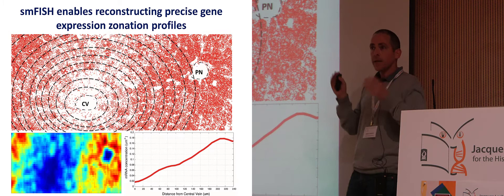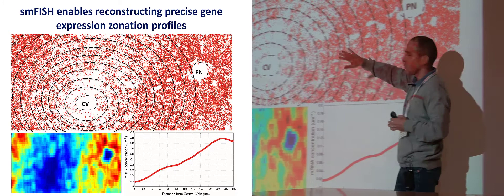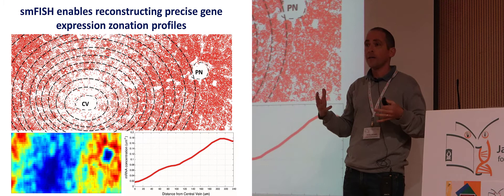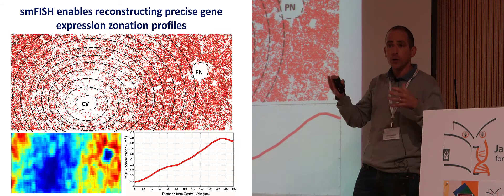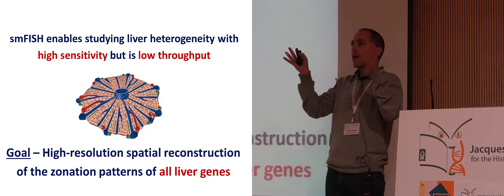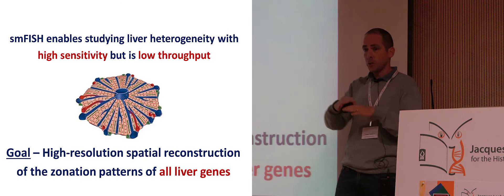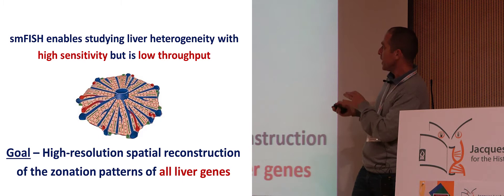We can understand the logic of assigning gluconeogenic function to the portal regions rather than the inner layers — because gluconeogenesis takes up a lot of energy, about 20% of the ATP of the liver in a fasted state. You would want to allocate this function to a region with a higher supply of oxygen. So this is a great technique, but it's a very low throughput technique. There are about 10,000 genes expressed in hepatocytes. If we want to use this technique to achieve a global map, we calculated it would take about 300 PhD students over about 10 years, which was a lot of money that we didn't have. So we had to revert to another technique.